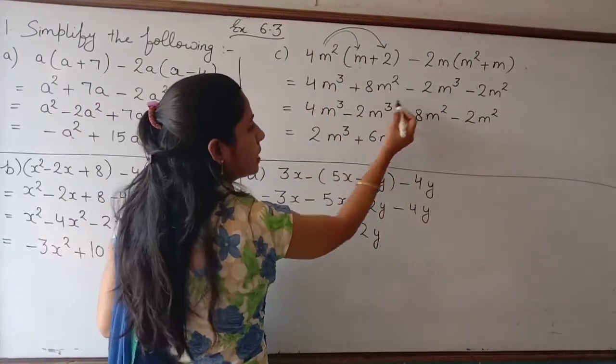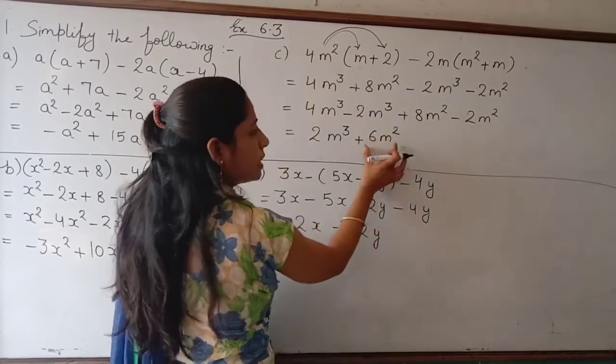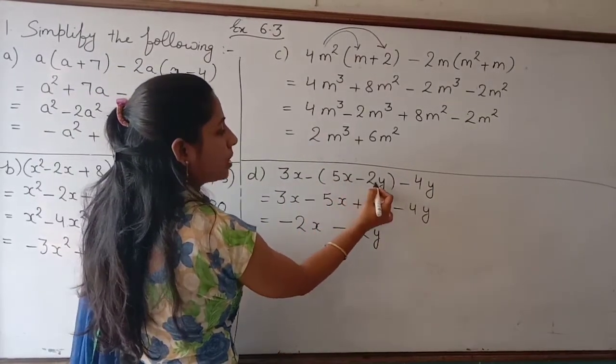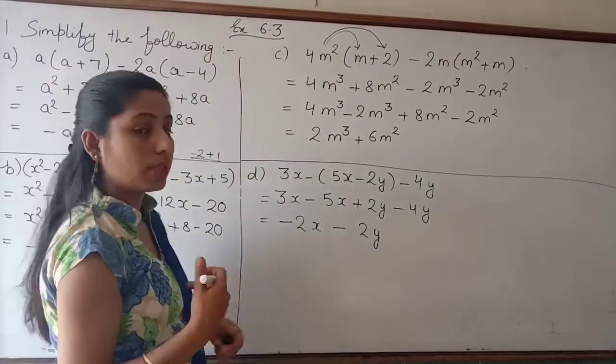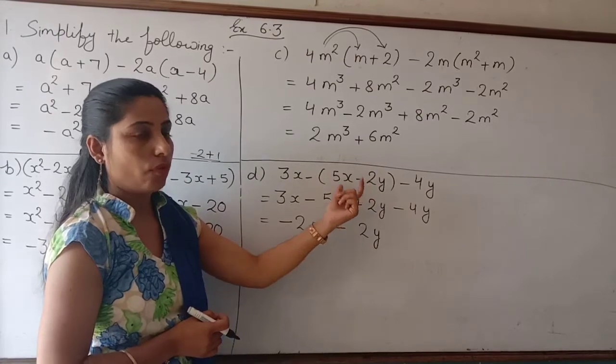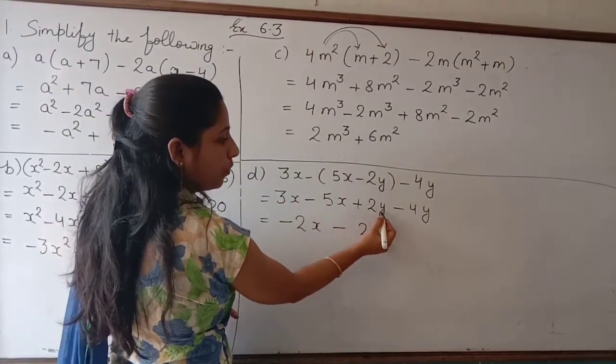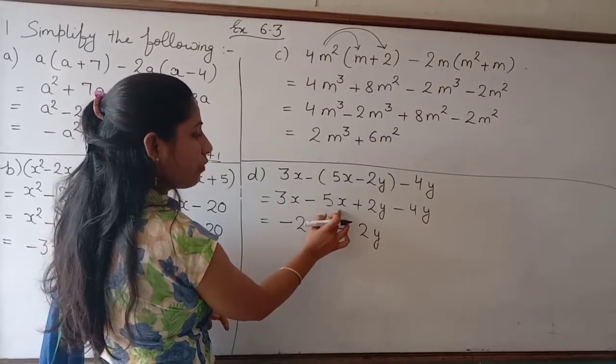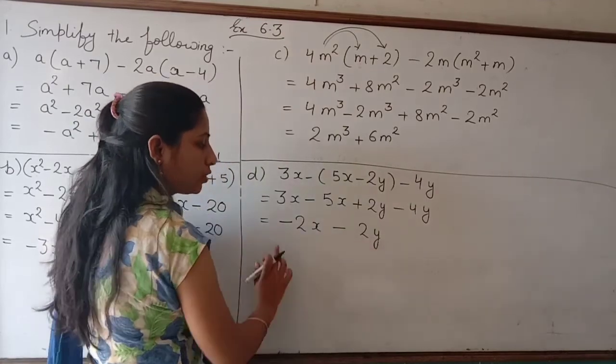Next: 3x - (5x - 2y) - (x - 4y). Negative is here, positive 2 here. Now we solve: 3x - 5x is -2x, and +2y - 4y is -2y. So the answer is -2x - 2y.